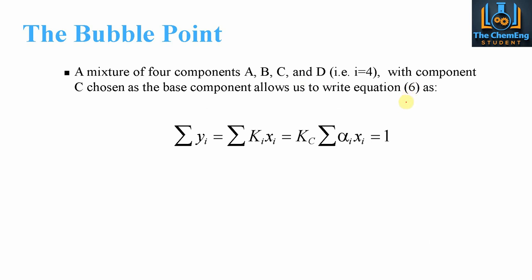This is based on our online course whereby we look at the precursors — the five equations — before we get to equation number 6. What we say here is that the summation of the vapour fractions of A, B, C, and D must equal the summation of the K value for each individual component multiplied by its respective liquid composition, and all of these must be equal to 1. So if we knew the relative volatility but didn't know the summation of the Y's, we could use this and make it equal to 1 to work out the overall value.